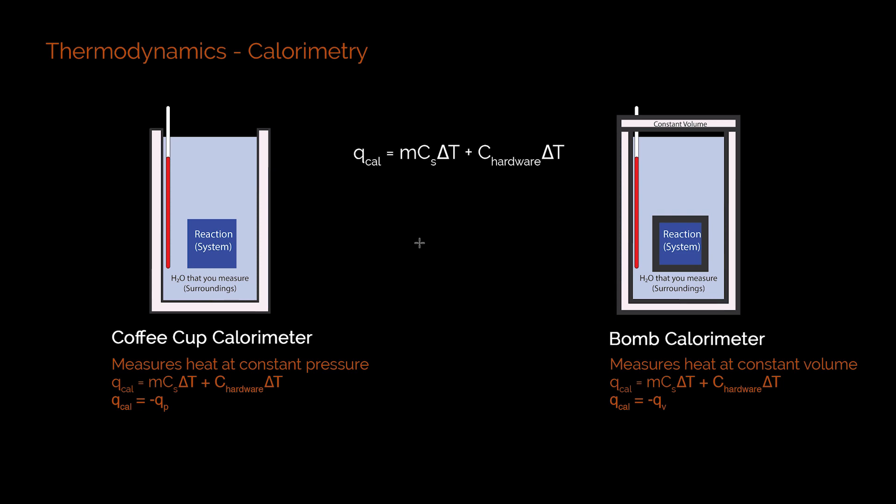Let's start by taking a look at this classic equation with calorimetry here. What you see is that qcal is equal to mc delta t plus c delta t.